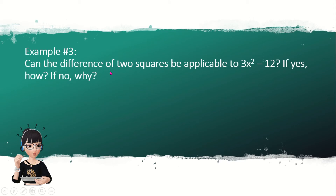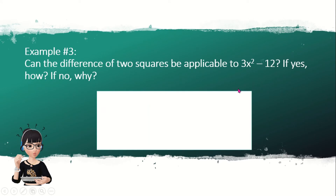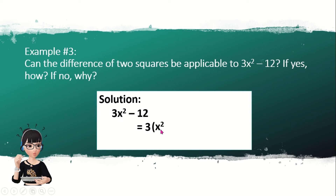Number 3. Can the difference of two squares be applied to 3x squared minus 12? The first step is to look if the given has a greatest common factor. For 3x squared minus 12, the numbers 3 and 12 have a common factor of 3. So divide each term by the GCMF, which is 3. Three x squared divided by 3 gives x squared, and negative 12 divided by 3 gives negative 4. So we first solve using the GCMF.